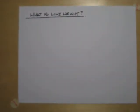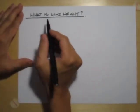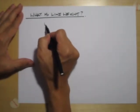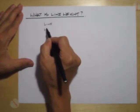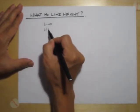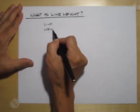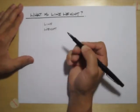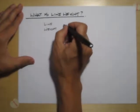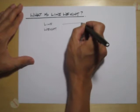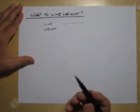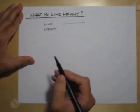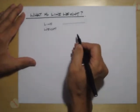So what is line weight? It can generally be described by these two words: line and weight. Line generally is a graphic description, whereas weight indicates thickness.